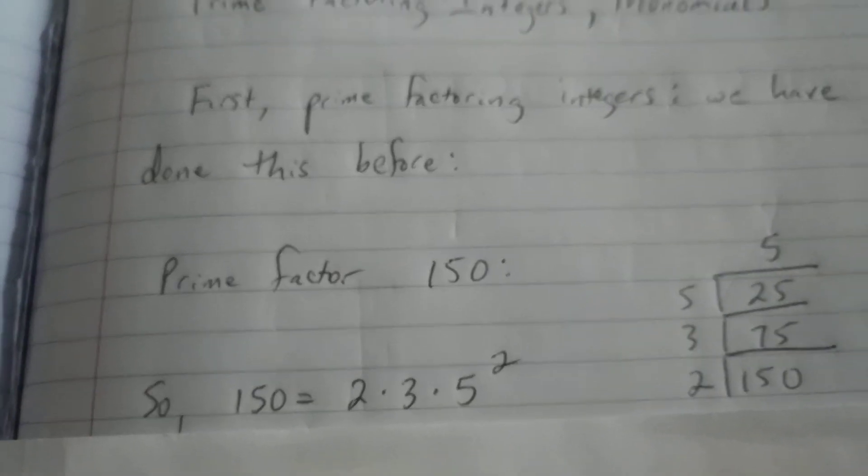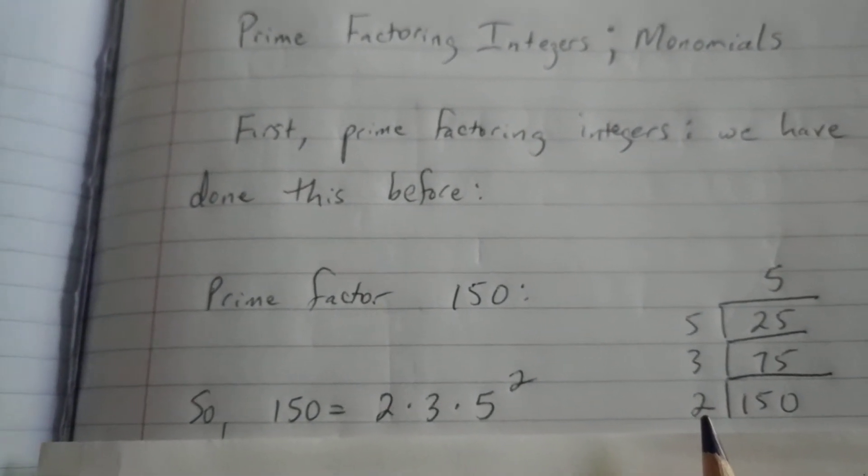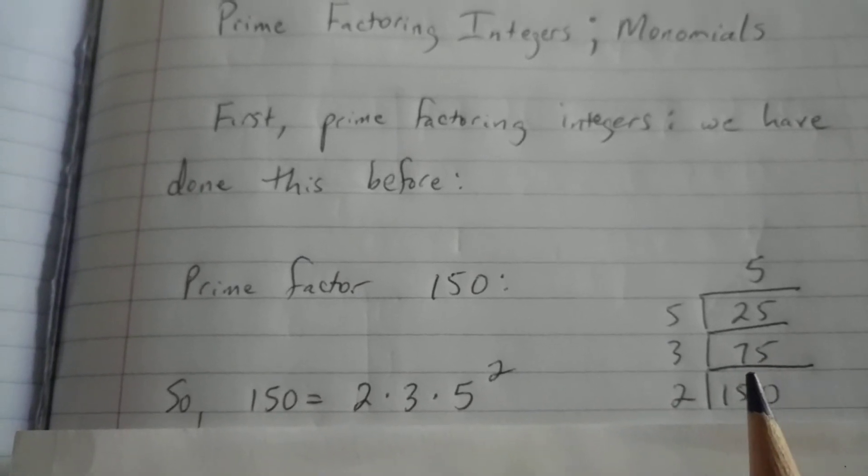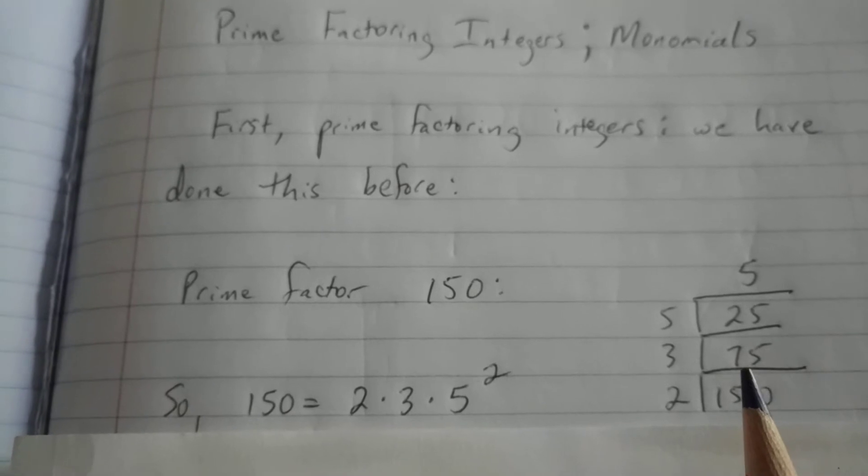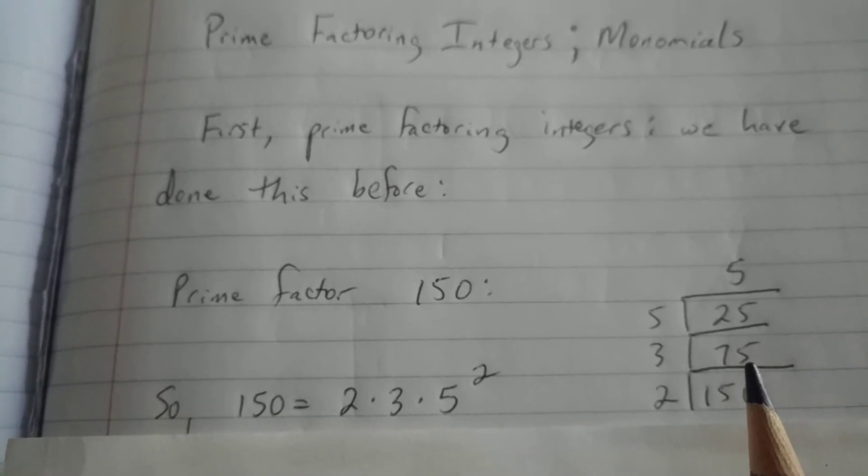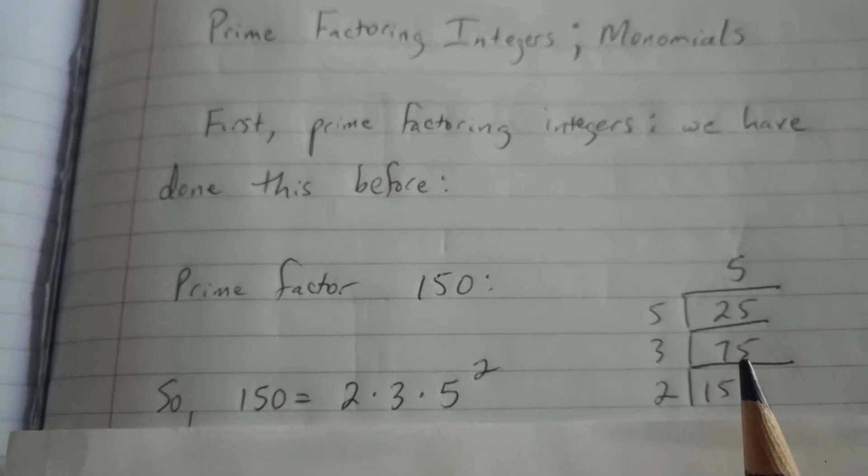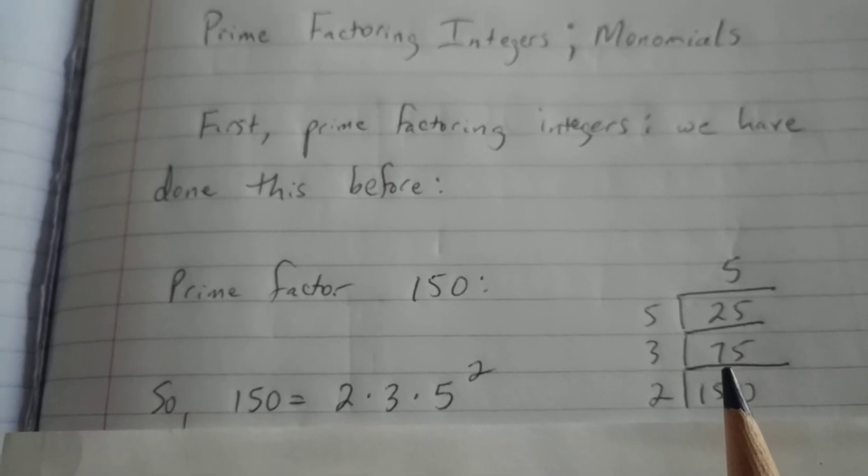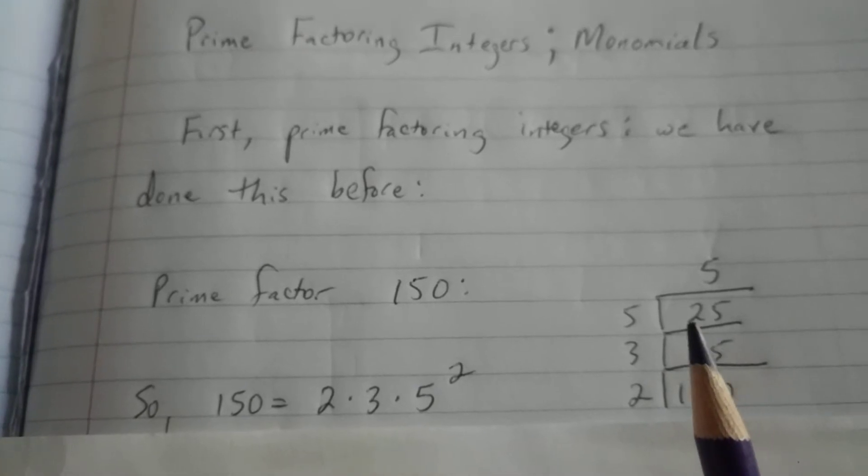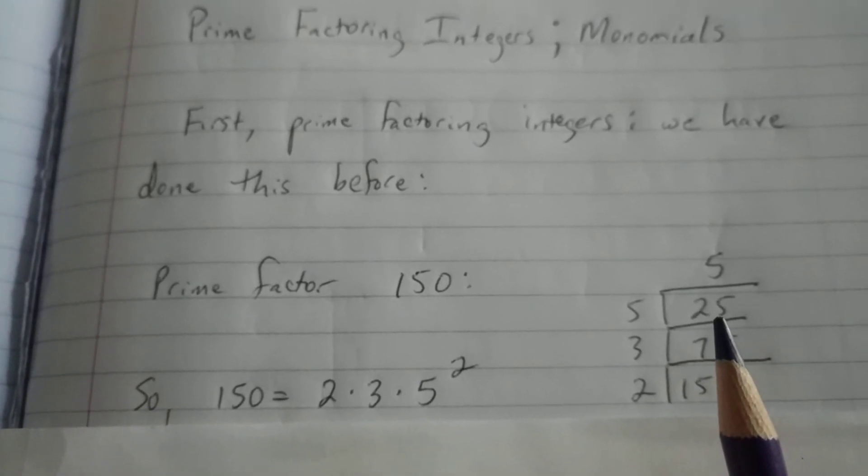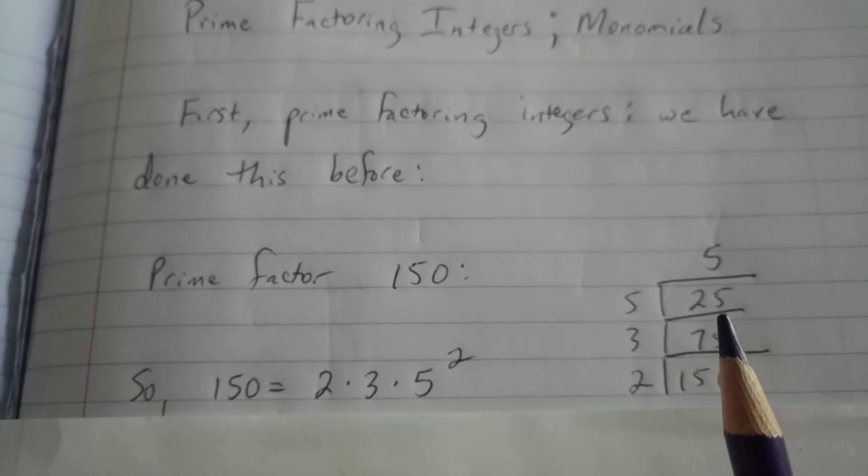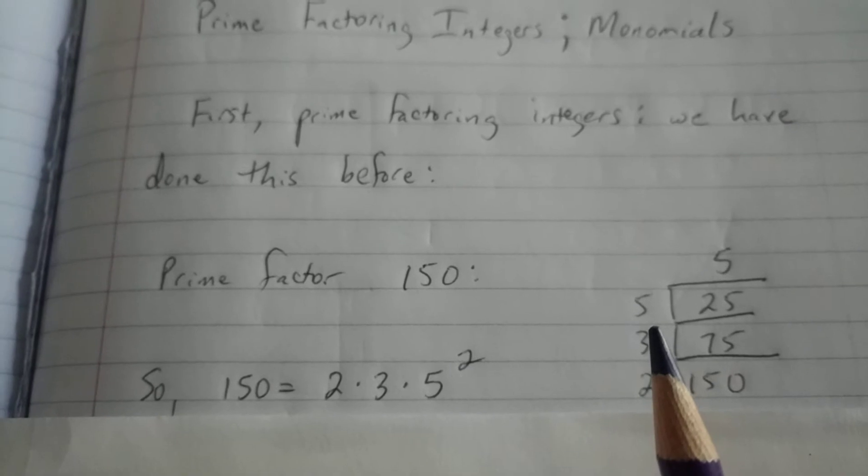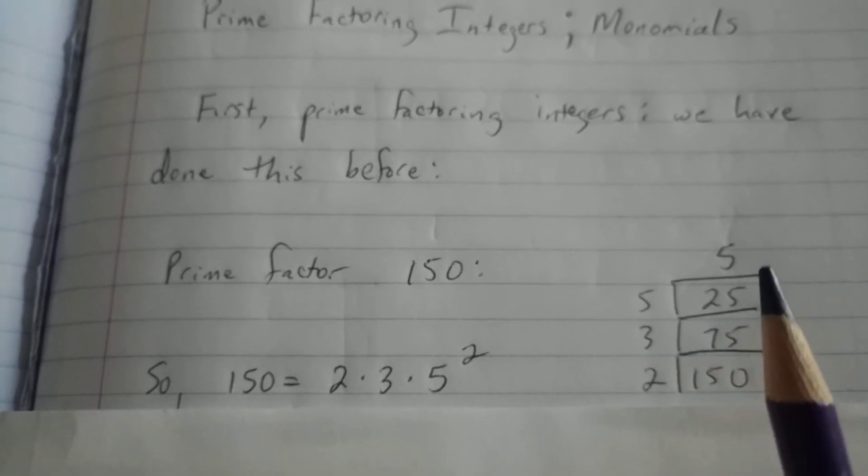Doing so, we let 2 divide 150 and it goes 75 times. 2 will no longer divide 75, but if we add 7 and 5 we get 12, which is divisible by 3. So we divide 75 by 3, 3 divides 75 25 times. 3 will not divide 25 evenly, so now we move up to the next prime, and 25 is divisible by 5, 5 divides 25 5 times.